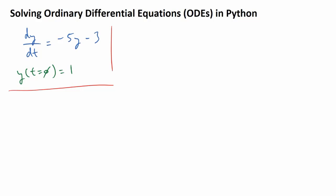The very first step we're going to do here in solving this is perform separation of variables. We've got a nice already-divided side here, so what I can say is if we move this over, we have minus 1 over (5y + 3) times dy is equivalent to dt. I just multiplied both sides by dt, divided it over, and pulled out a negative 1.